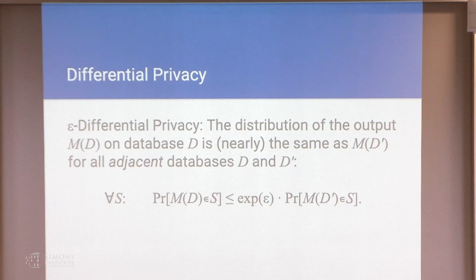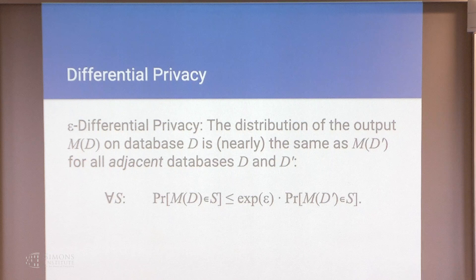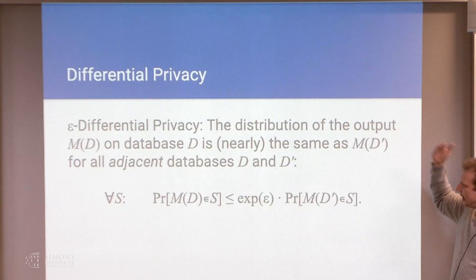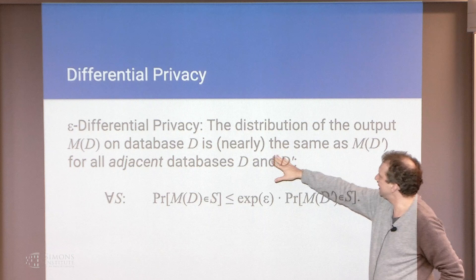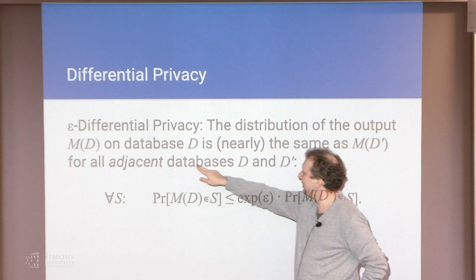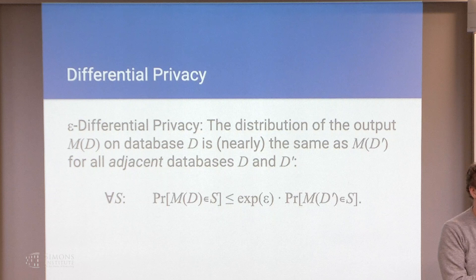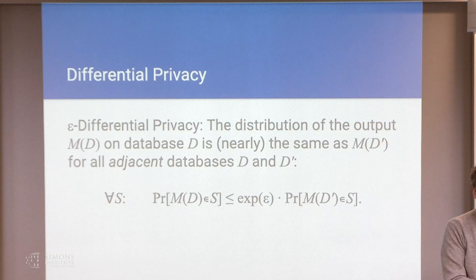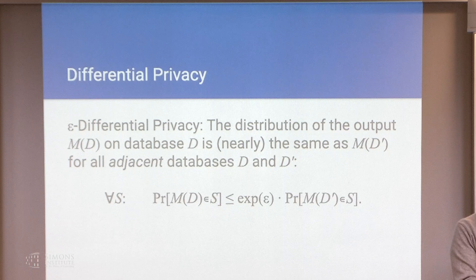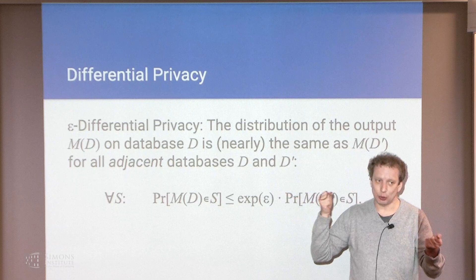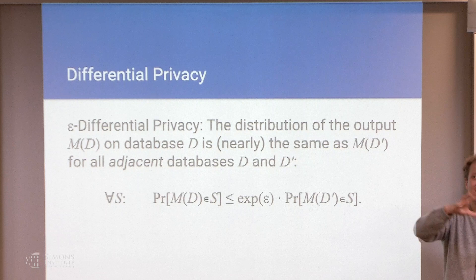So this is the standard definition of differential privacy. And you've seen it a hundred times before. You have seen it a bunch of times today. And it reads, the distribution of the output on database D is nearly the same as the output on D prime for all adjacent databases D and D prime. And this word adjacent, or neighboring databases, it's very application dependent. Sometimes we talk about the entry-level privacy when we are guaranteeing privacy to a single action that a person takes. We like to talk about two databases being adjacent or neighboring when the different contributions of a single individual, but we can consider different units of granularity.